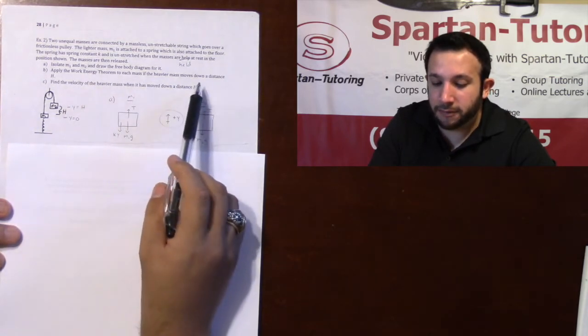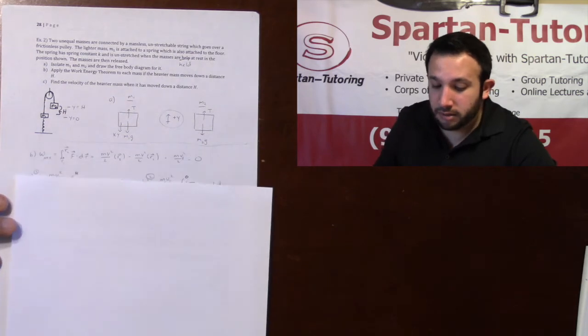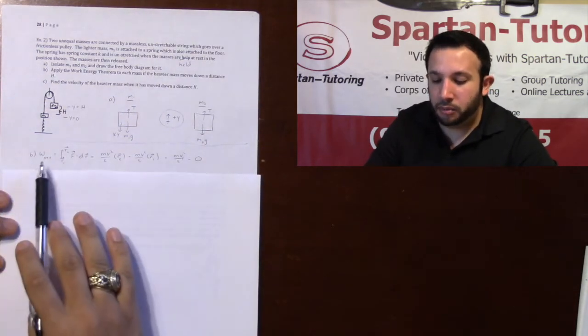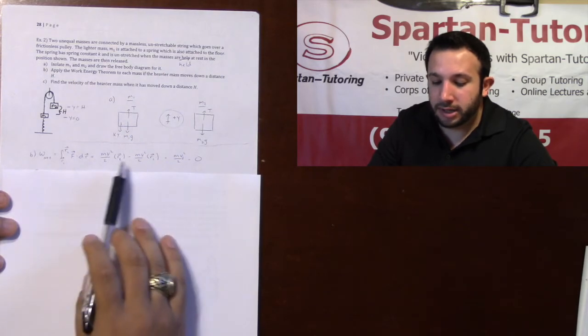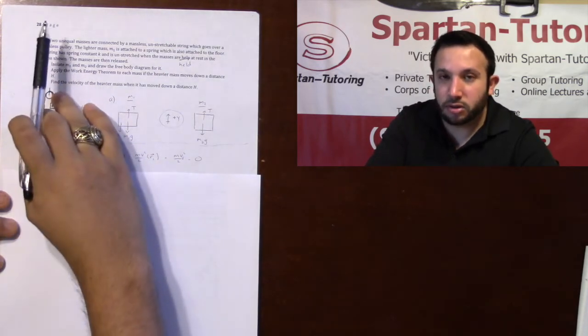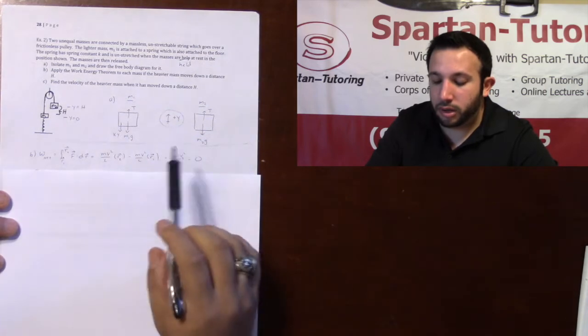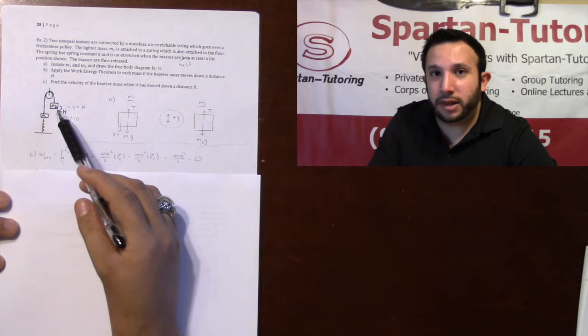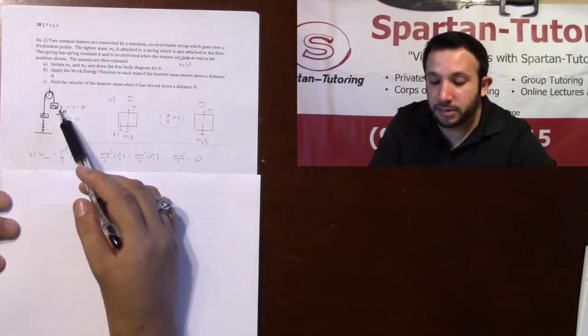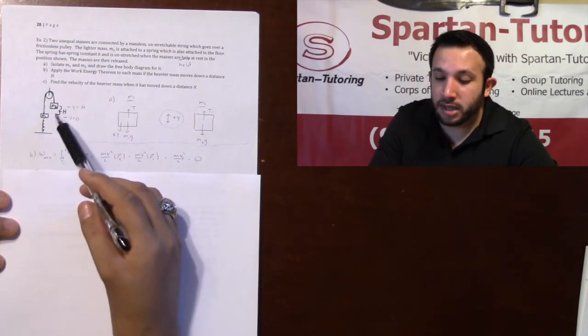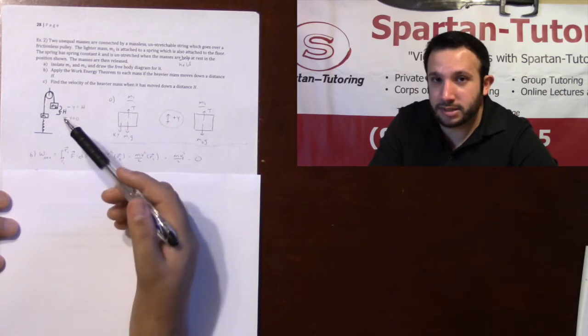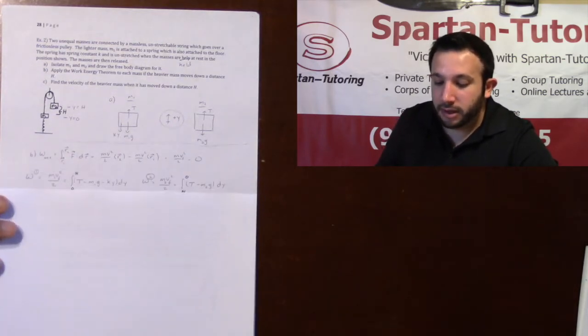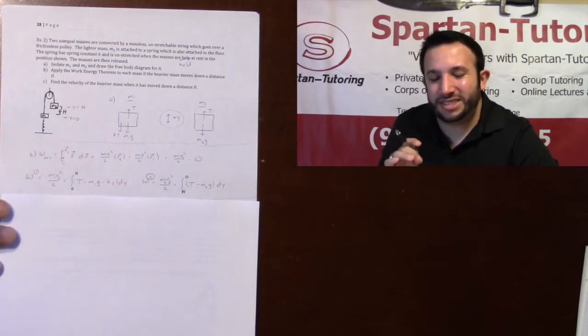The work-energy theorem: first you start by saying your net work is your change in kinetic energy. Because it starts from rest, we know our initial velocity is zero and then you'll have some final velocity. I don't know what it is—it didn't say it stopped after moving height h, just that it moves a distance height h, so I have some final velocity.